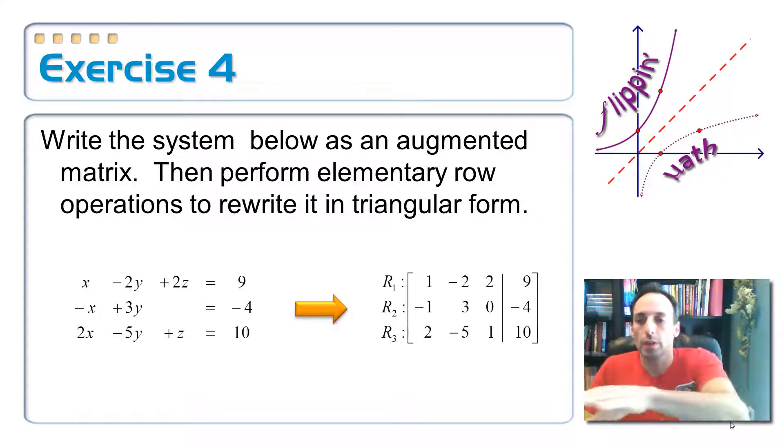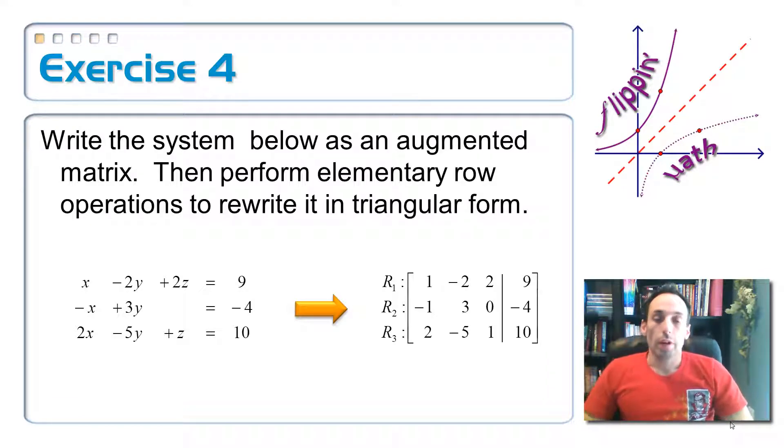So, first of all, I'm going to take all of those coefficients, put it in the coefficient matrix, and then add to that a column of 9, negative 4, 10. Now, we're going to see that we're going to be able to do this in a calculator in a matter of seconds, but whenever you do, it will not have this vertical line in here. This vertical line is just to help us visually separate all the coefficients from all of the answers over there on the far right-hand side.